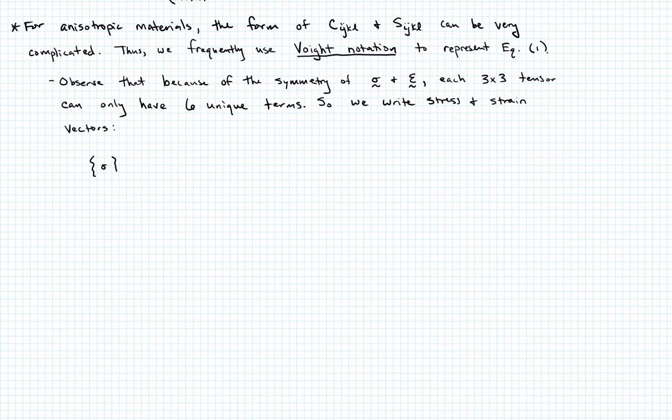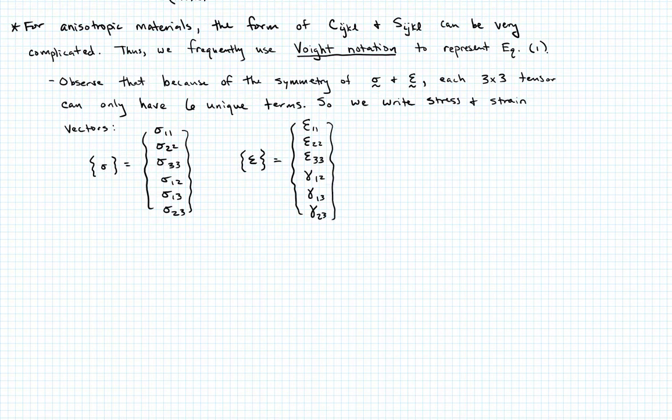So let's take the stress vector, we'll write this as sigma with braces to indicate that it's a vector. And it's going to have 6 components: sigma_11, sigma_22, sigma_33, sigma_12, sigma_13, and sigma_23. And we could write the strain vector in a similar fashion. The strain vector also has 6 terms. It's going to be epsilon_11, epsilon_22, epsilon_33, and now this is going to be a little different. This will be gamma_12, gamma_13, and gamma_23. Those are engineering shear strains, not the tensor components specifically. So we'll call this equation 4.